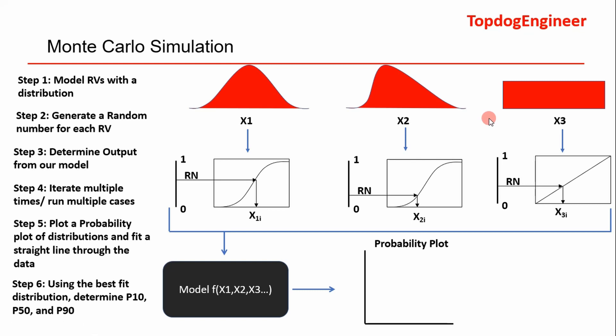There's just several distributions you can use to model these inputs. Once you've modeled your input values, your random variable values, you can generate a random number. Using the cumulative distribution function of the distribution that you're using, you can generate a value between zero and one, because the area under these curves is equal to one.